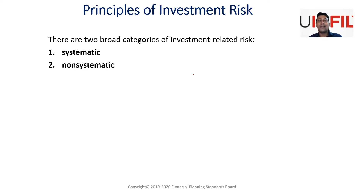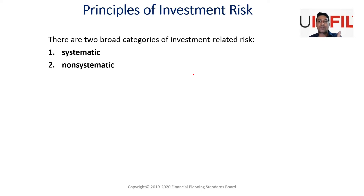On the other hand, non-systematic risk is a risk which is specific to an individual industry or a particular company. Because the problem is confined to a particular company or industry, it can definitely be reduced with a diversified portfolio, whereas systematic risk cannot be reduced.